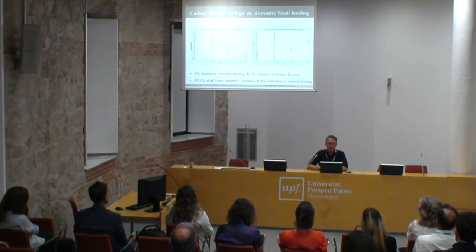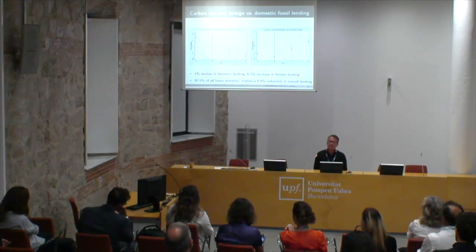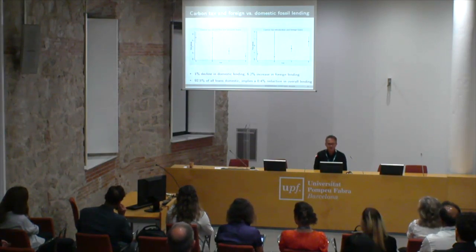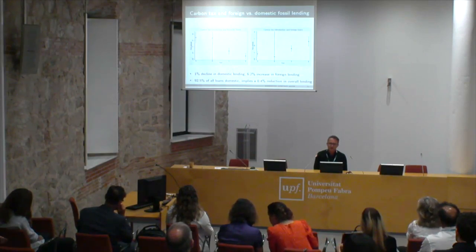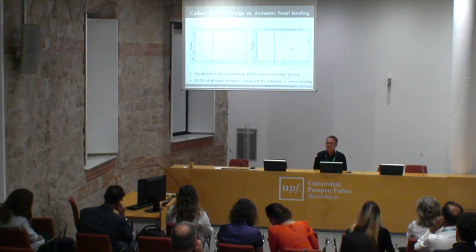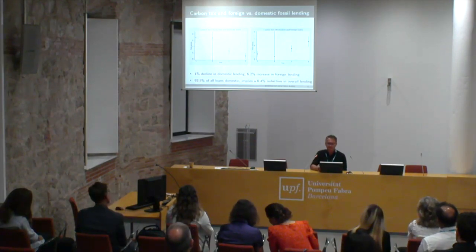The key chart shows point estimates for domestic fossil lending on the left and foreign fossil lending on the right, with the red line marking the year of carbon tax introduction. There is no pre-trend, and immediately after a carbon tax is introduced, domestic fossil lending declines while foreign fossil lending increases. The decline in domestic lending is about 1%, the increase in foreign lending is more than 6%, but since 92.5% of all fossil loans are domestic, in aggregate there is an overall reduction in fossil lending of about 0.4% — we are in a waterbed scenario.